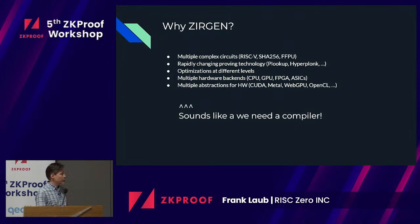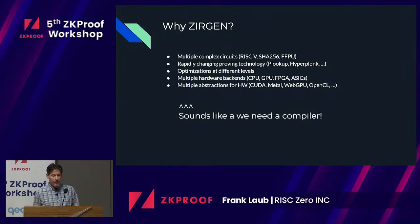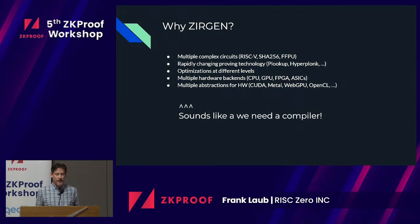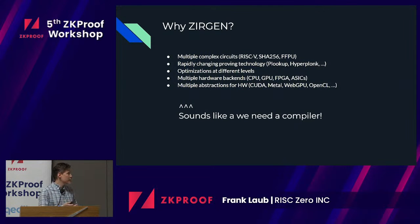So why do we want something like Zergen? Why do we need a circuit compiler? There are all sorts of complex circuits and applications we'd like to write circuits for. RISC-V is the main one, but we also implement a SHA-256 circuit — we use that as our primary hashing function. We have this thing called an FFPU, which is basically a finite field processing unit. The technology is changing really fast, so we want something where we can quickly try new approaches without hand-writing a bunch of stuff every time. There are all sorts of optimizations at different levels, and we want to generate code for CPU, GPU, possibly FPGA, and for different hardware abstractions like CUDA, Metal, WebGPU.